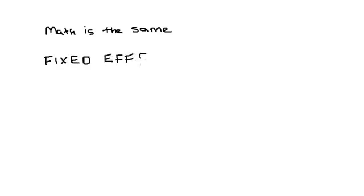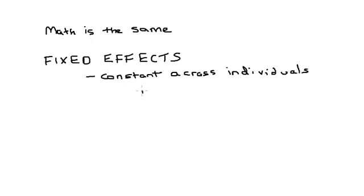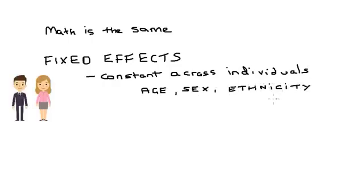So let's talk about fixed effects. Fixed effects in regression and ANOVA are variables that are constant across individuals. These variables like age, sex, or ethnicity don't change or they change at a constant rate over time.